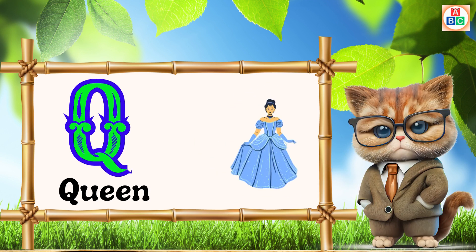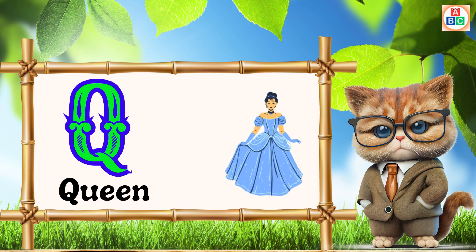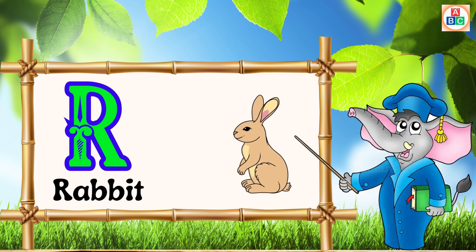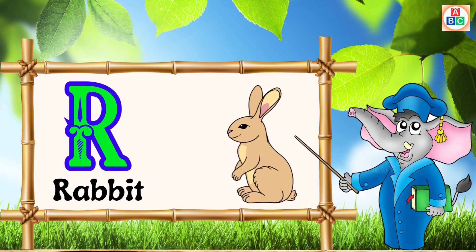Q is for queen, k-k-queen. R is for rabbit, r-r-rabbit.